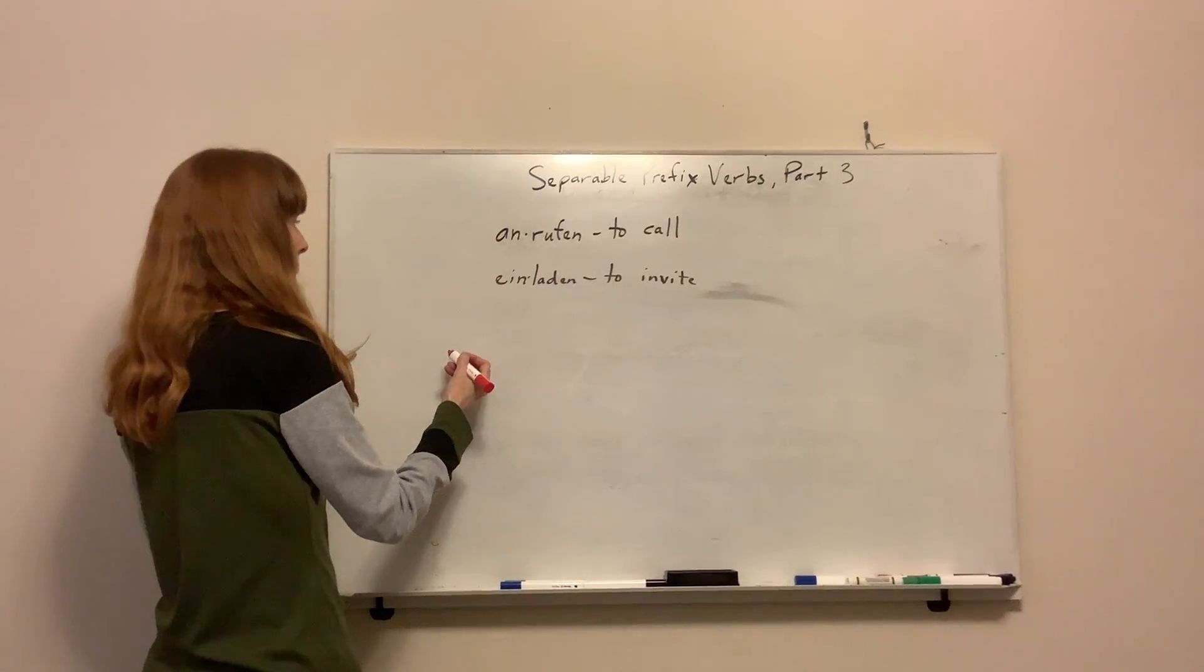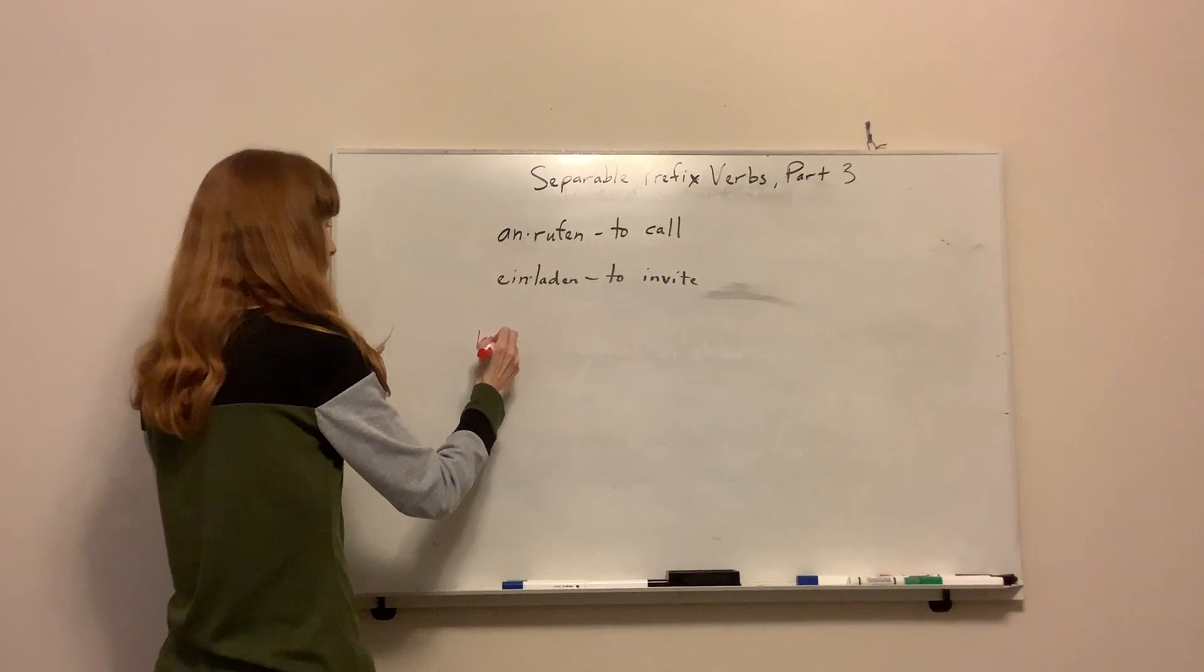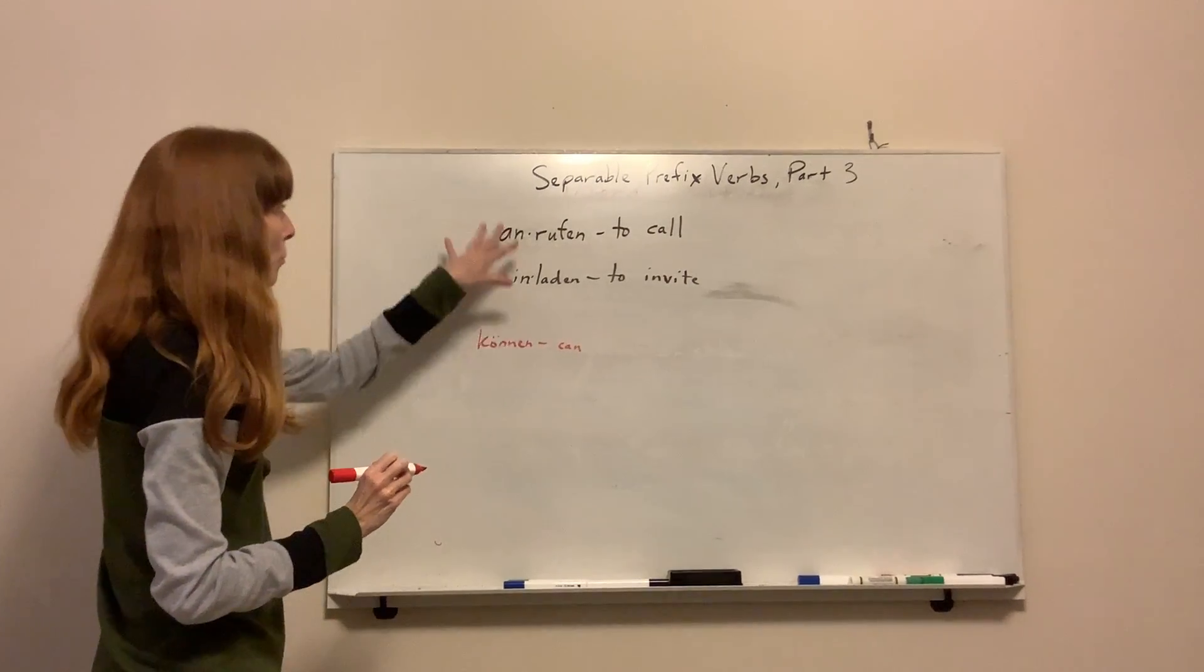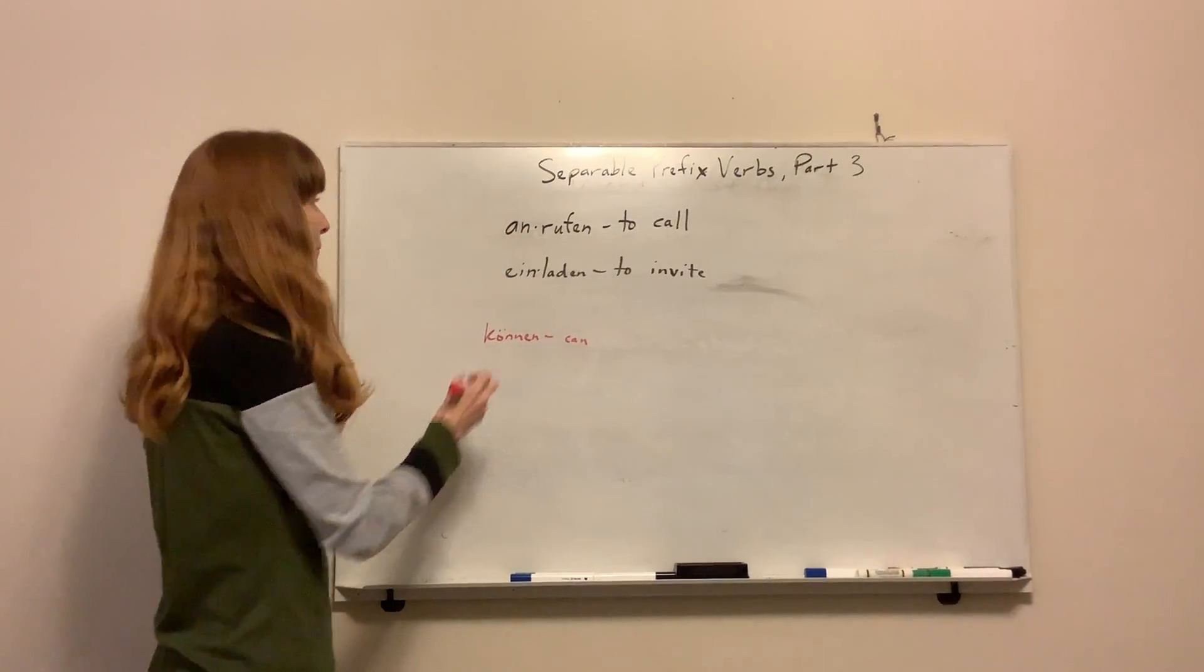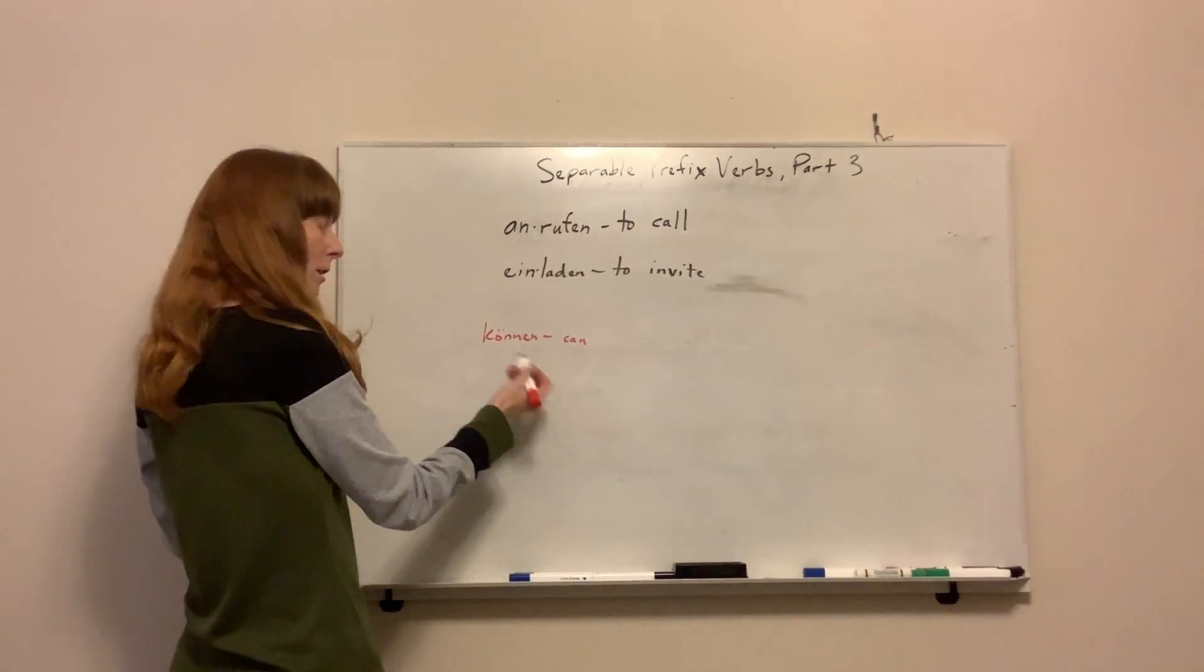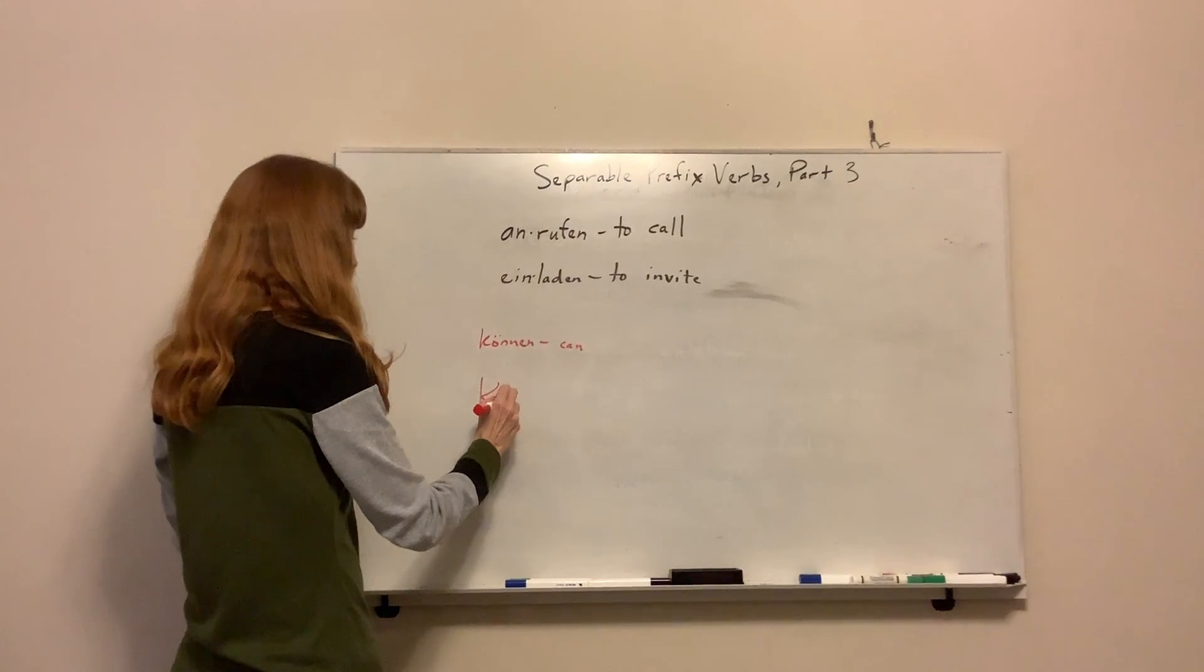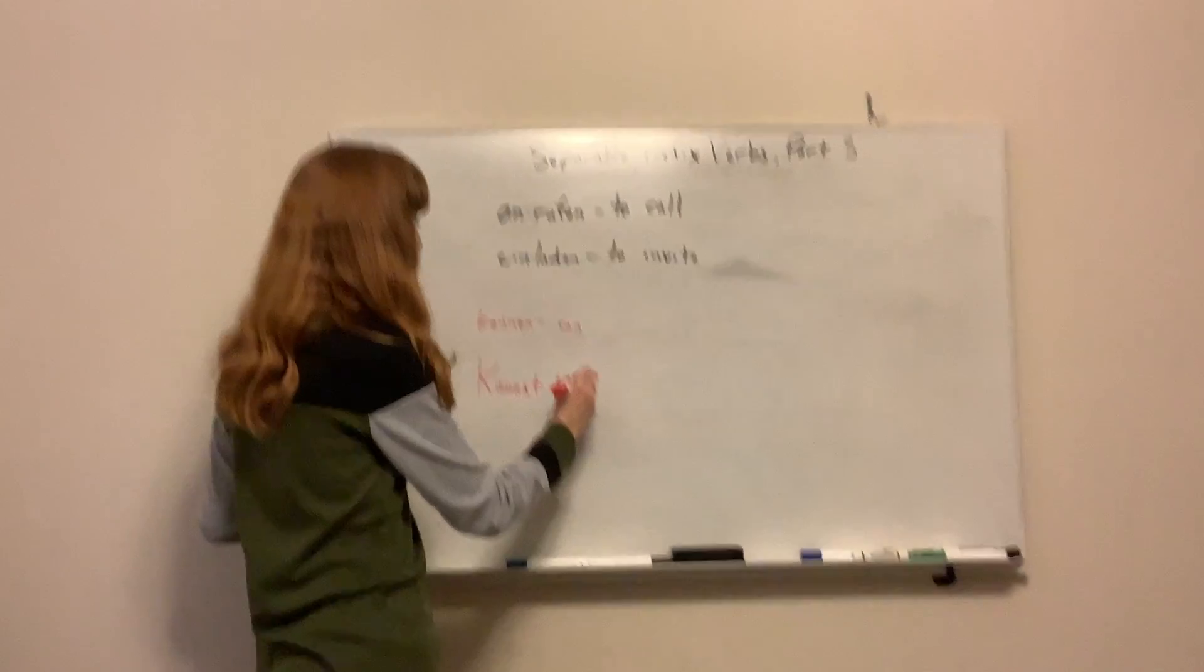We'll take can, for example. Können. If I want to combine this with one of those, maybe I want to ask if someone can call me. First of all, I'll conjugate my modal verb like I normally would. Kannst du mich?